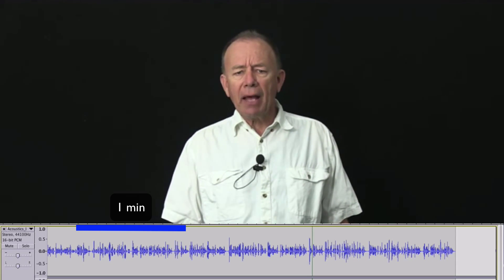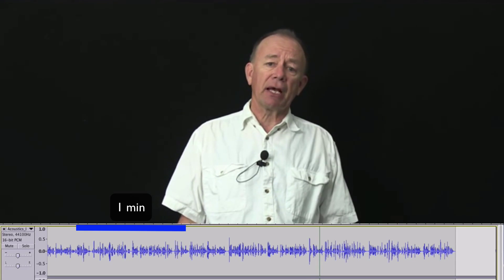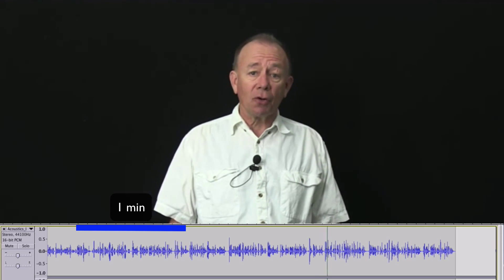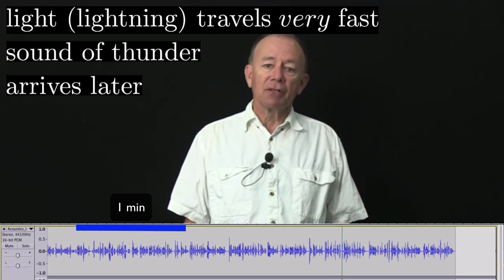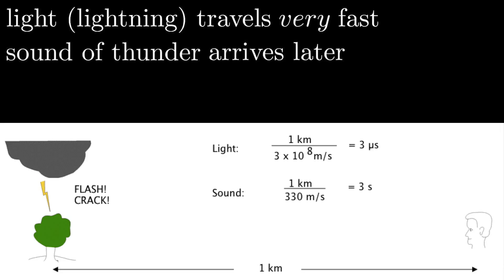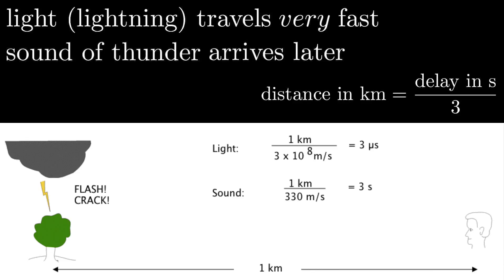One rather important parameter of sound is the speed at which sound travels. You've probably noticed that in a thunderstorm, you see the lightning and then hear the thunder perhaps seconds after the lightning. That tells you that light from the lightning travels much faster than the sound of the thunder, since both are created at the same electrical event between a cloud and the ground. The speed of sound is about one third of a kilometre per second, so if you count the time between lightning and thunder and divide the number of seconds by three, you get approximately the distance to the lightning strike.